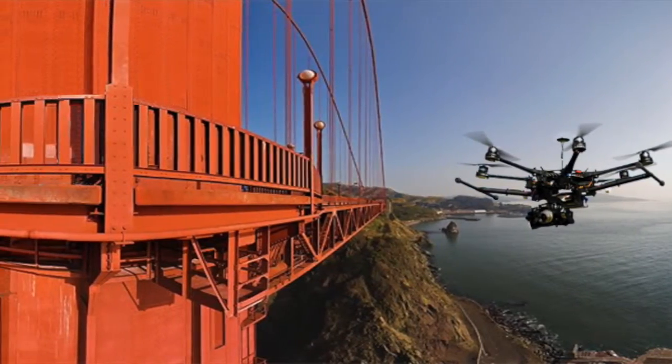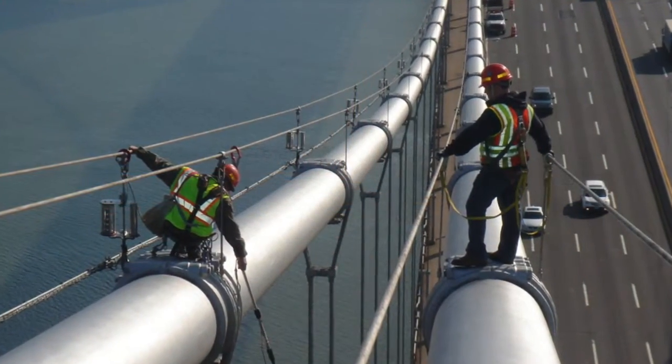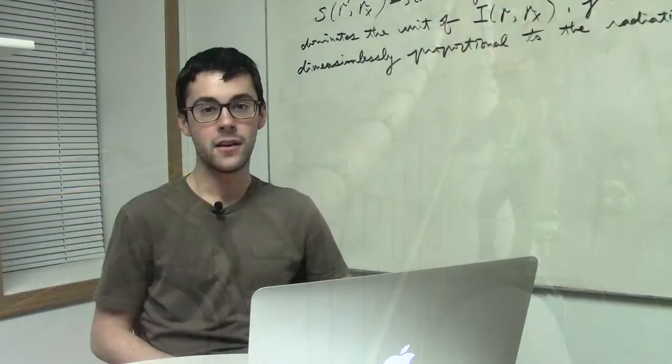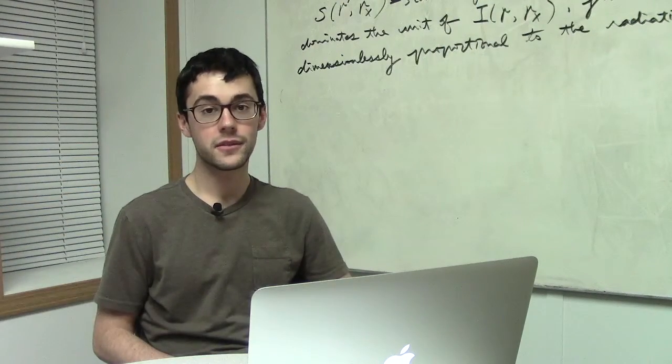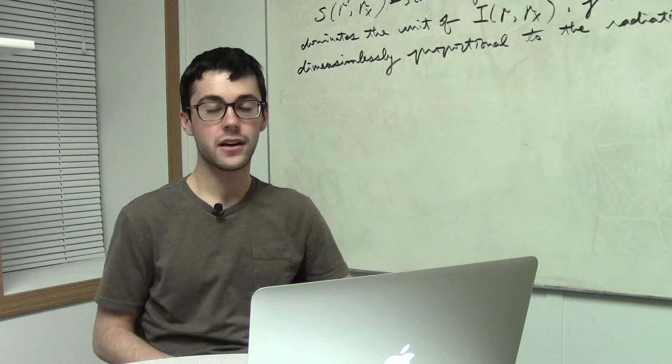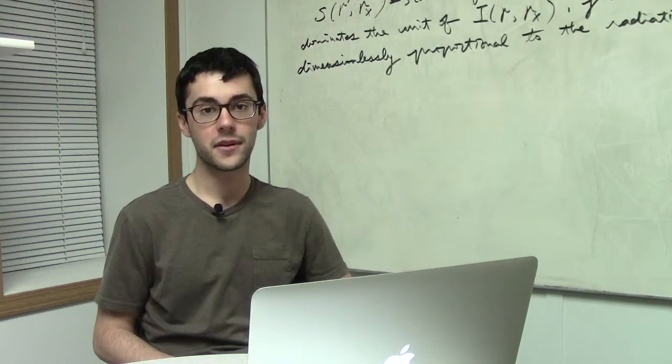As UAVs are beginning to be used in bridge inspection, certain problems have arisen that need to be solved. One of the biggest problems is maneuvering UAVs in the small, hard-to-reach locations underneath bridges, thus requiring humans to perform that part of the inspection. Our mission is to develop an autonomous bridge inspection UAV by April 2016 that will inspect bridges for defects in hard-to-reach locations and transmit images back to the ground station.